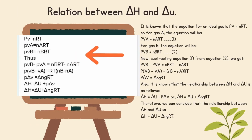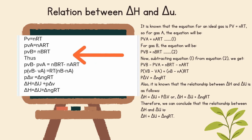The most important topic is the relation between ΔH and ΔU. See the image and understand the terms. It is known that the equation for an ideal gas is PV equals nRT. For gas A: PV_A equals n_A·RT (Equation 1). For gas B: PV_B equals n_B·RT (Equation 2). Subtracting Equation 1 from Equation 2: PV_B minus PV_A equals n_B·RT minus n_A·RT, so P·ΔV equals Δn_g·RT. Also, the relationship between ΔH and ΔU is: ΔH equals ΔU plus PΔV, or ΔH equals ΔU plus Δn_g·RT. Therefore, the relationship between ΔH and ΔU is ΔH equals ΔU plus Δn_g·RT.